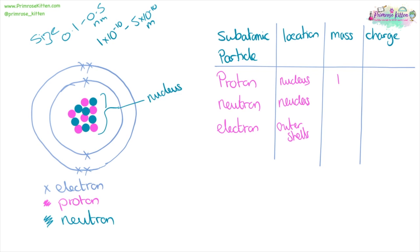Protons have a mass of one, neutrons have a mass of one, and electrons are incredibly tiny. Their mass is one two-thousandths that of the mass of a proton or neutron. Protons have a charge of plus one, neutrons have no overall charge, and electrons have a charge of minus one.